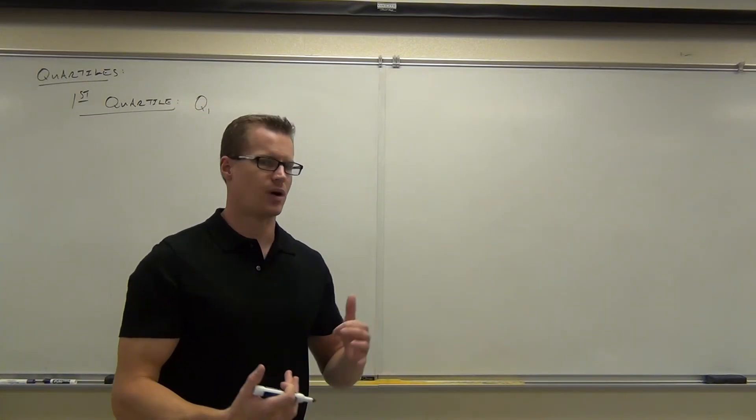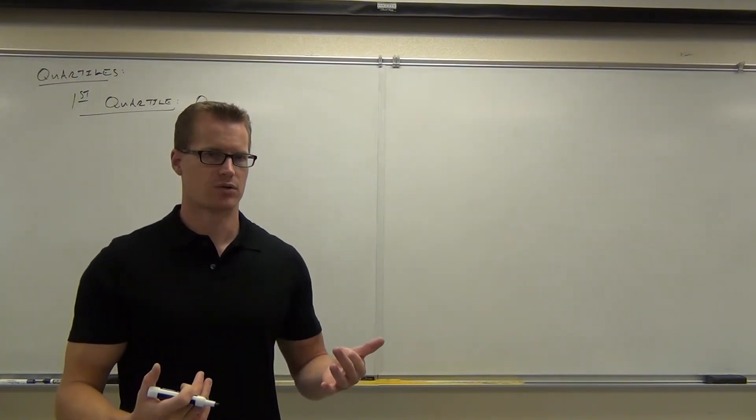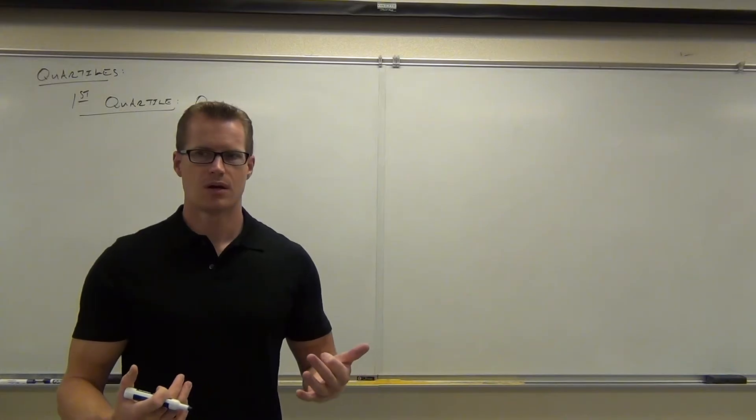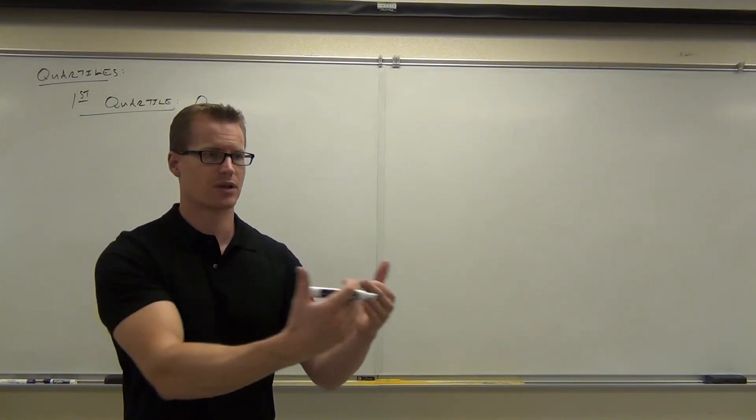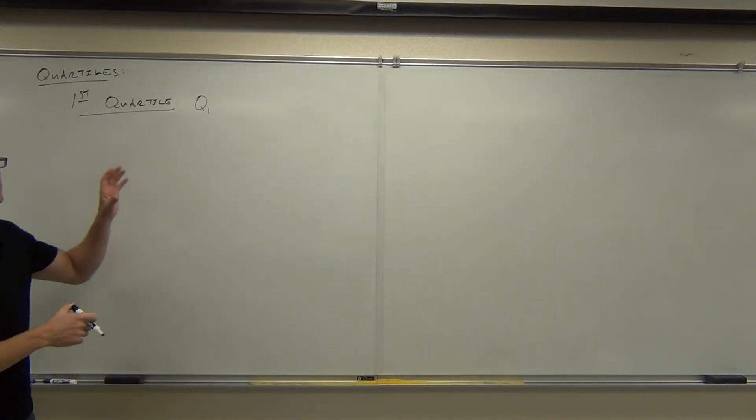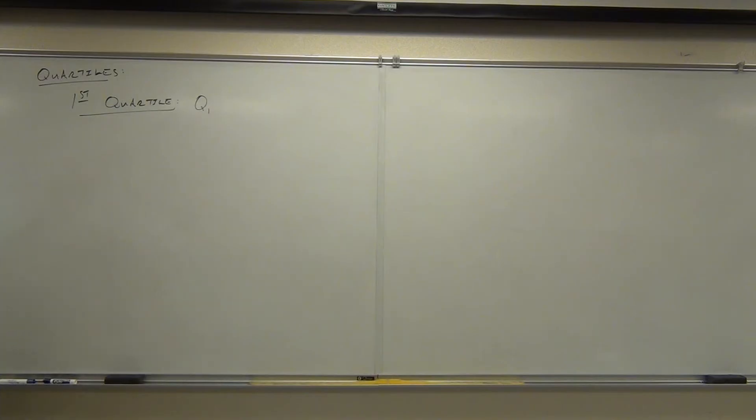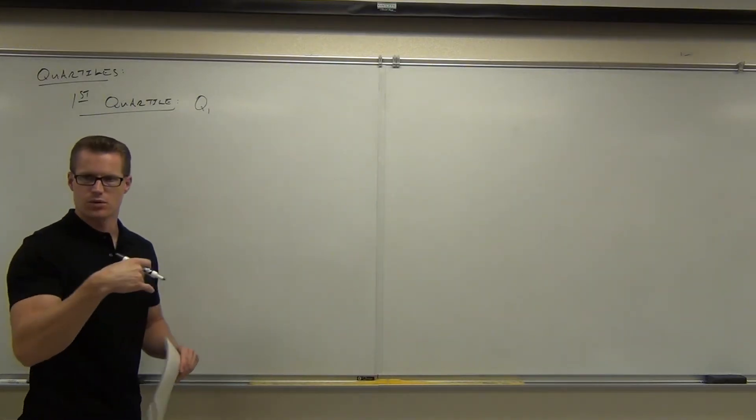Now, what does that imply if I say the bottom 25%? Does that data have to be ordered or can it be unordered? What do you think? If it's like the median, it better be in order, right? So the bottom 25% would be the lowest 25% of the values. That's what we mean by the first quartile. So Q1 is going to be the data value that represents the bottom 25% of sorted, that means in order, data.